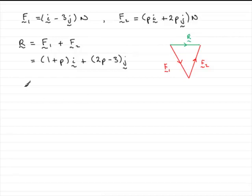So if we write that in, if parallel to the vector i, then the j component, which is 2p minus 3, must be 0.